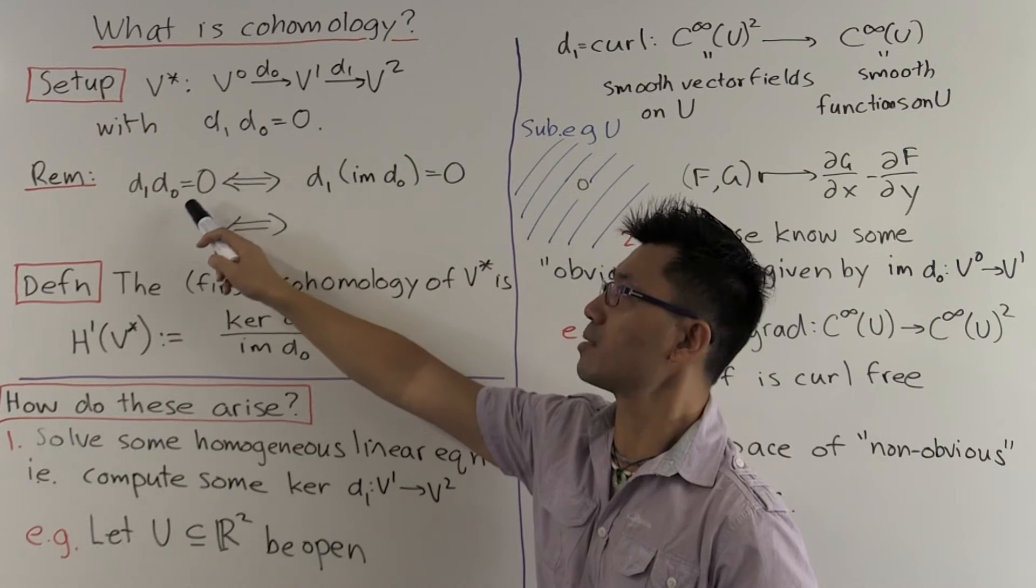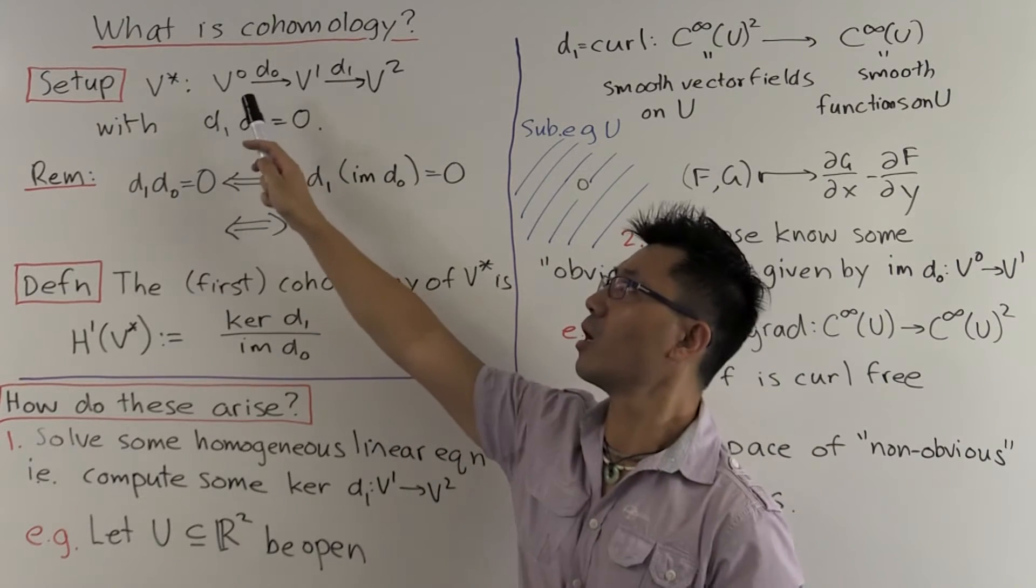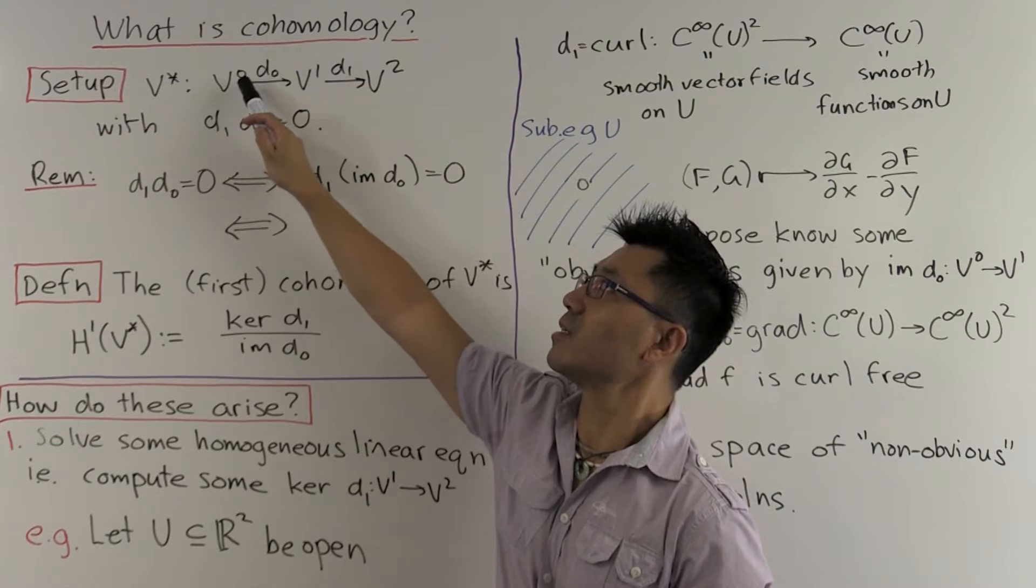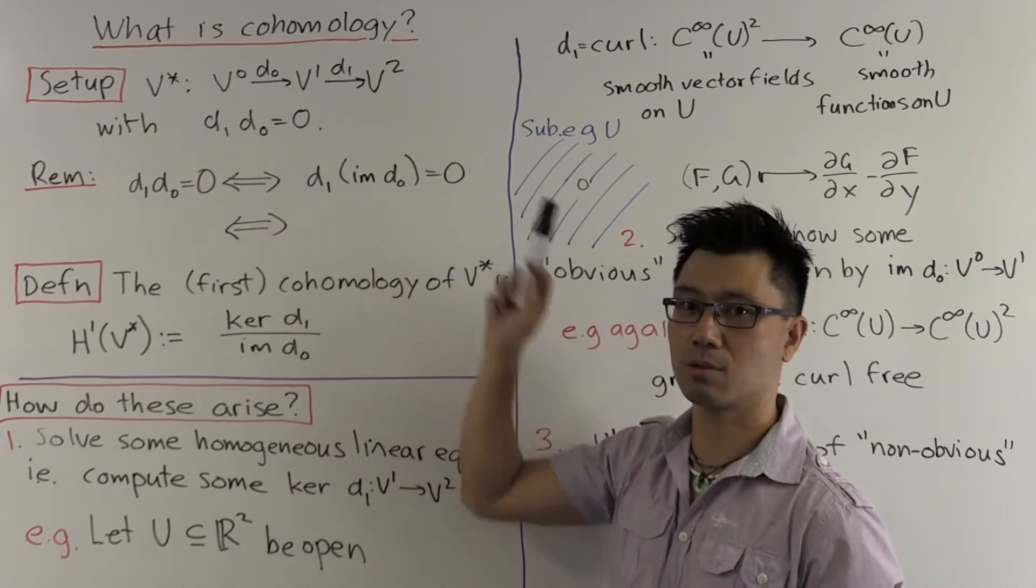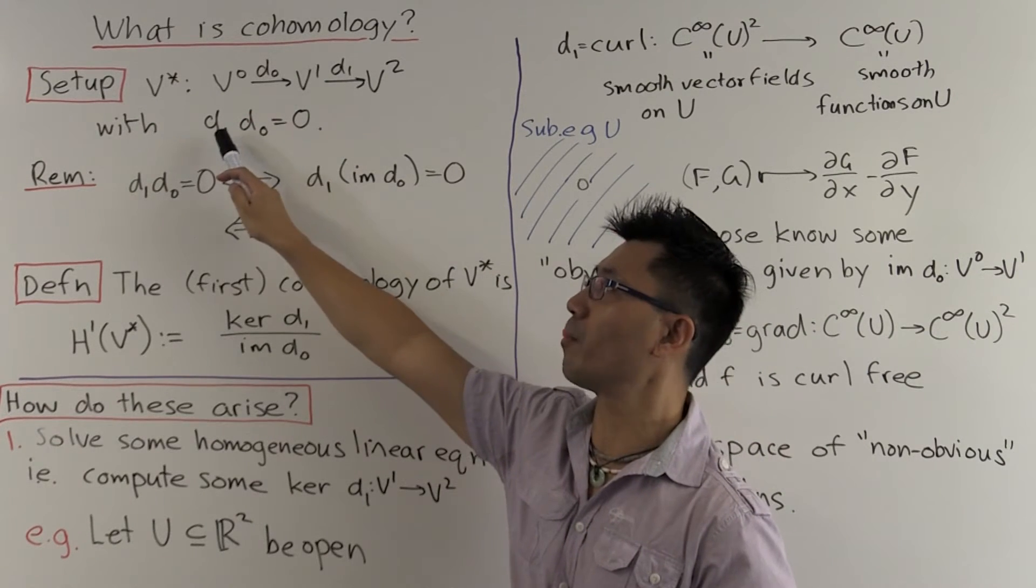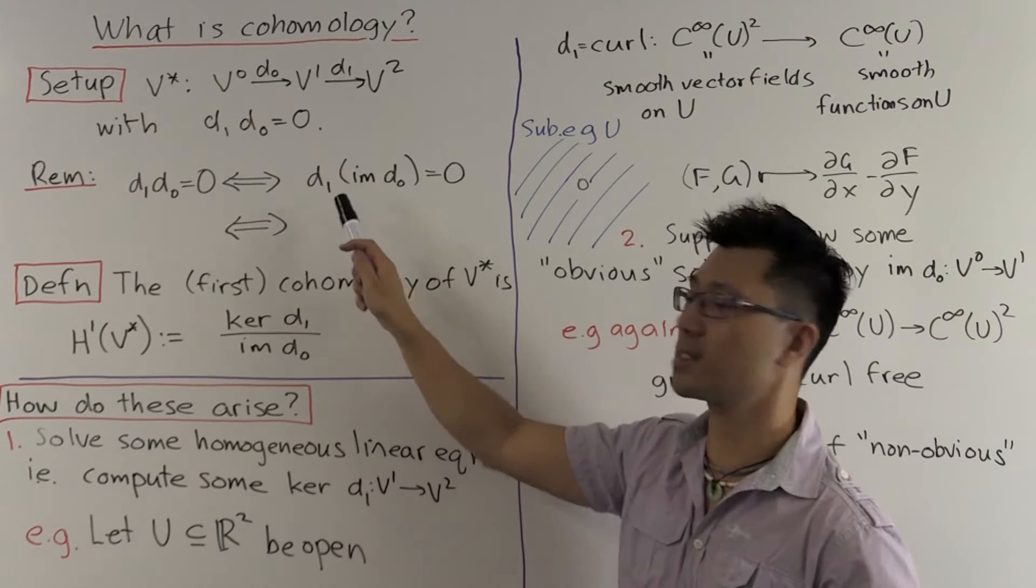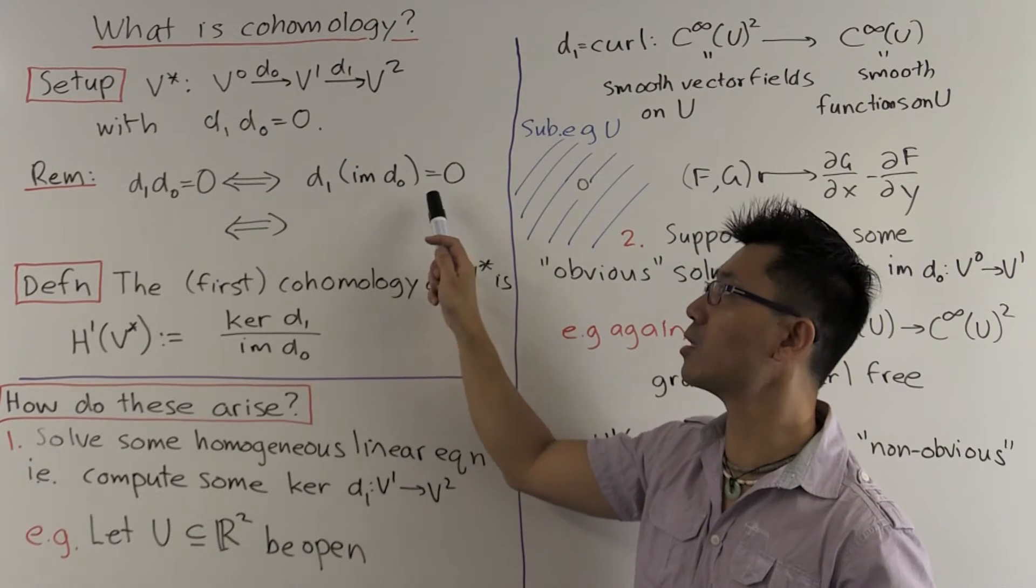So let's see what this means. If we do D0, that sends V0 to its image. And if when we apply D1 to that we get zero, that means D1 of this image is equal to zero.